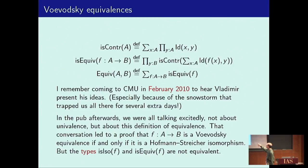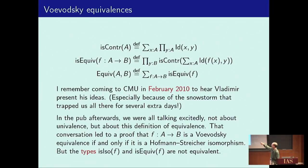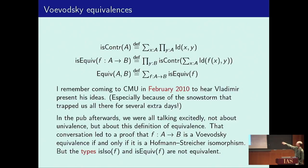The sigma type means a dependent sum type — an element of this type consists of an X that is an element of A, together with an element of this pi. The pi is the type of dependent functions — an element of this pi is a function which assigns to every element Y an element of the identity type from X to Y.